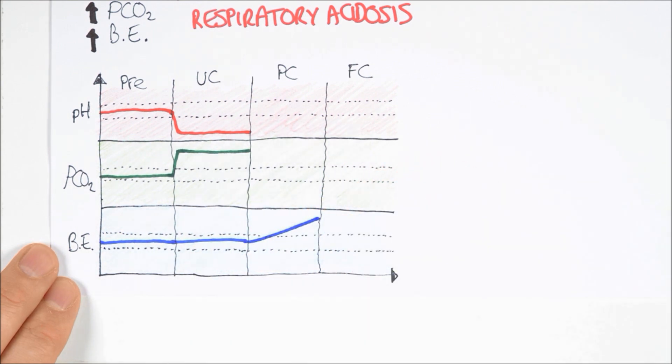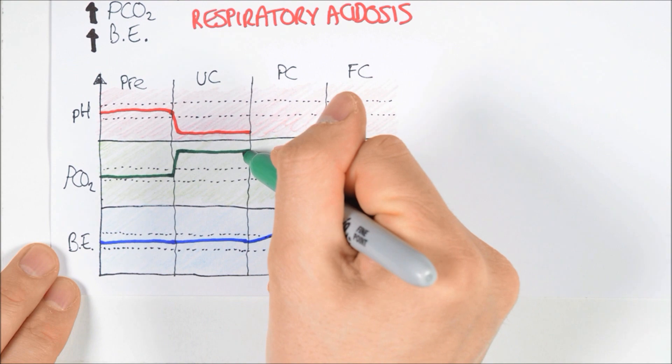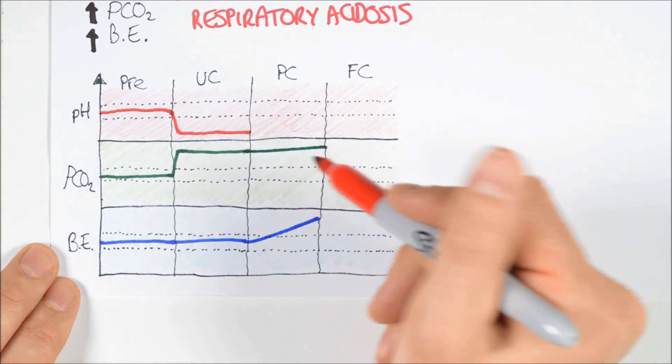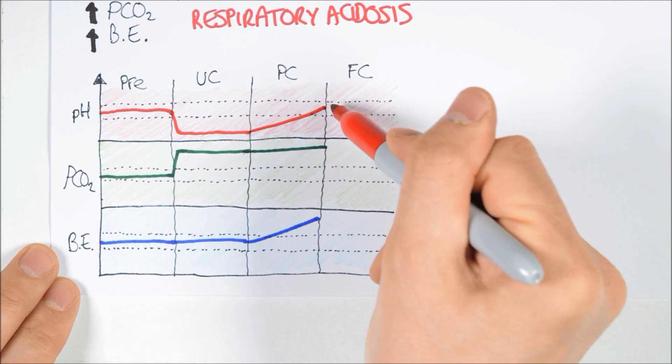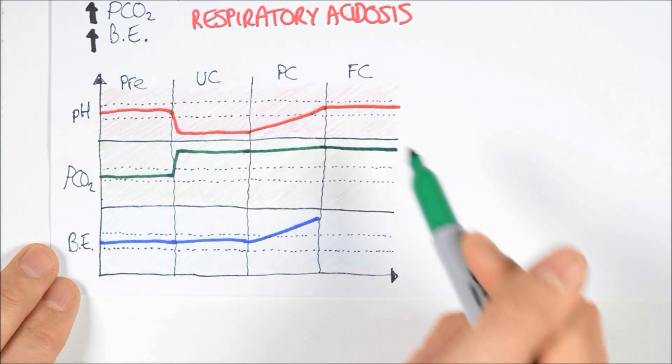Once the compensatory mechanisms kick in, the PCO2 remains unchanged, the base excess starts increasing, which reduces the proton concentration and causes the pH to climb. In the fully compensated state, the pH is normal, but the PCO2 and base excess are both elevated.